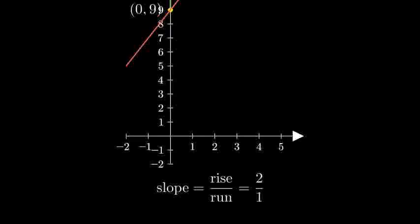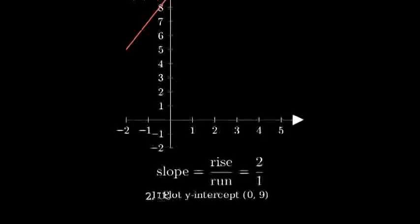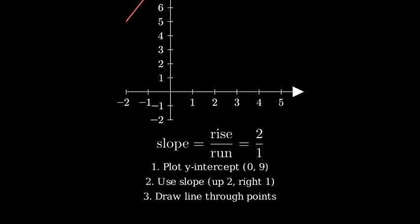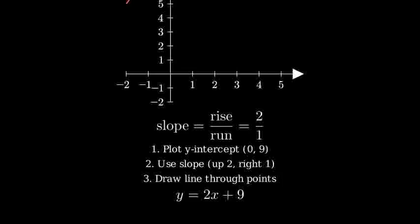To summarize, we graphed y equals 2x plus 9 by first identifying the y-intercept of 9 and plotting the point (0, 9), then using the slope of 2 to find additional points by going up 2 and right 1, and finally drawing a straight line through our points. That's how we graph a linear equation in slope-intercept form.